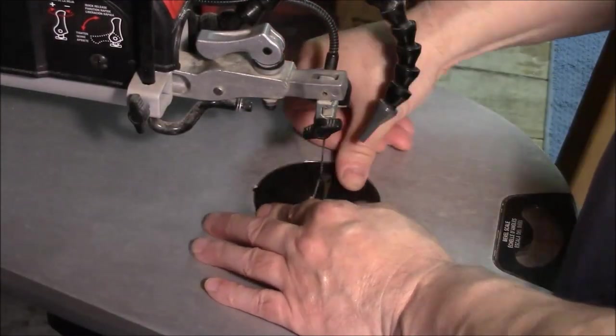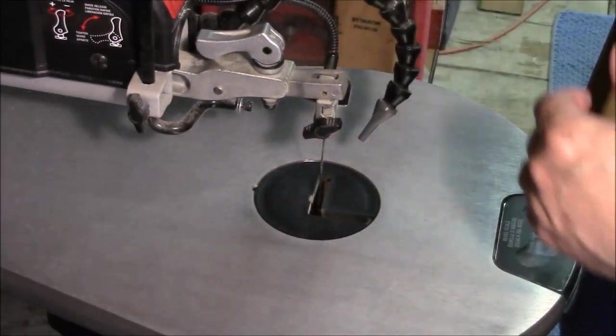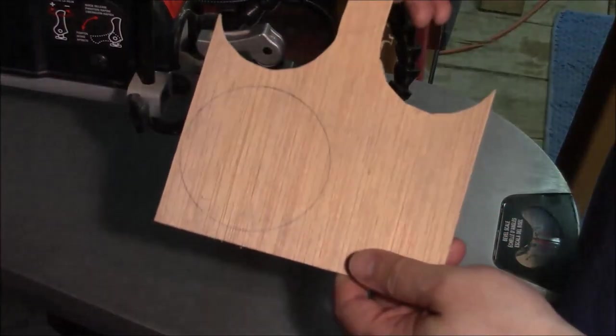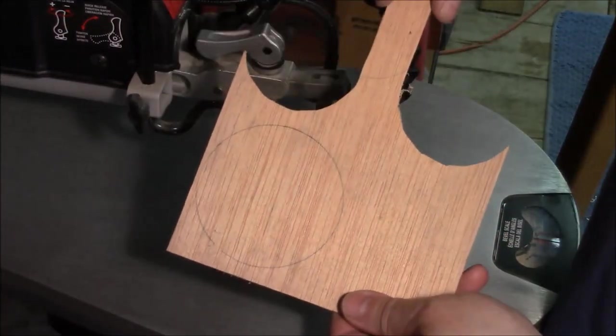Also, when I cut the wooden discs, I'm going to cut near the line, but I'm going to leave the line, and then I'll take it down the rest of the way on the disc sander.